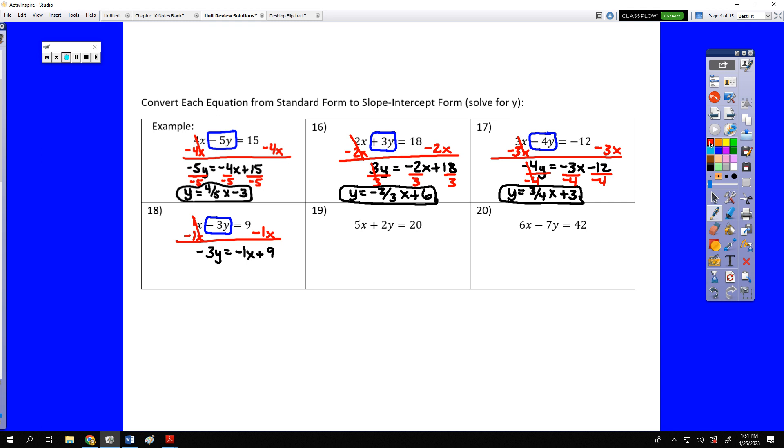Then we would need to divide all three terms by negative 3. Again, be very careful. Do not lose that negative. Negative 1 divided by negative 3 is a fraction, but it is a positive 1 third x. And positive 9 divided by negative 3 is negative 3. So y equals 1 third x minus 3.